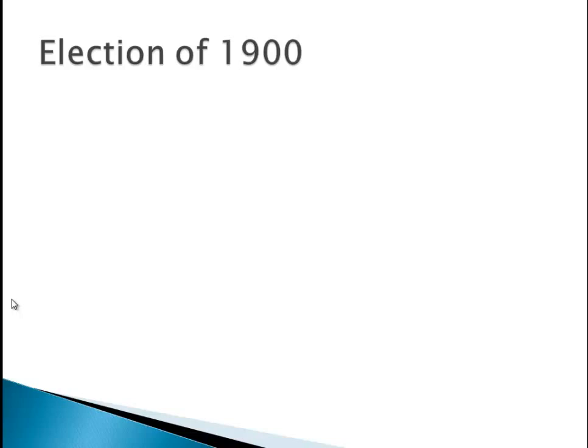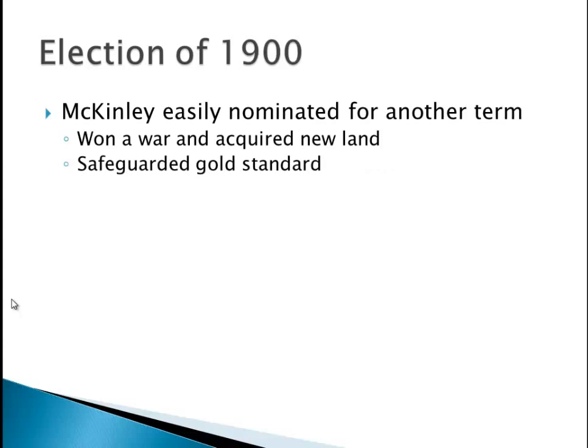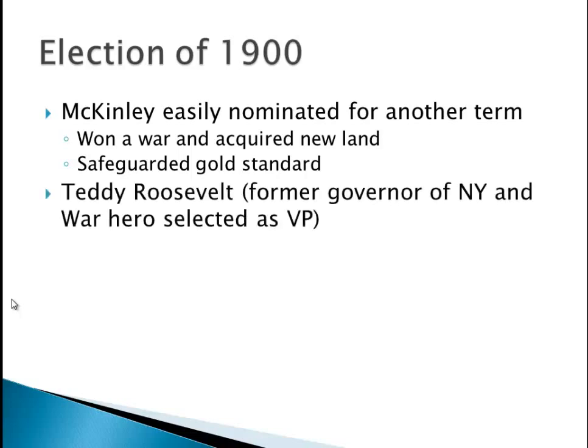Let's go back to domestic affairs. In 1900, we have an election. McKinley is easily nominated by the Republicans for another term — he won a war and acquired new land, many people approved of him. He safeguarded the gold standard — a big issue of the 1890s — and then he chose Teddy Roosevelt, former governor of New York and war hero, as vice president. Interestingly, many political bosses in New York actually favored him becoming vice president because they thought he was too controlling there and that he would just be vice president and you'd never hear from him again. They were wrong.